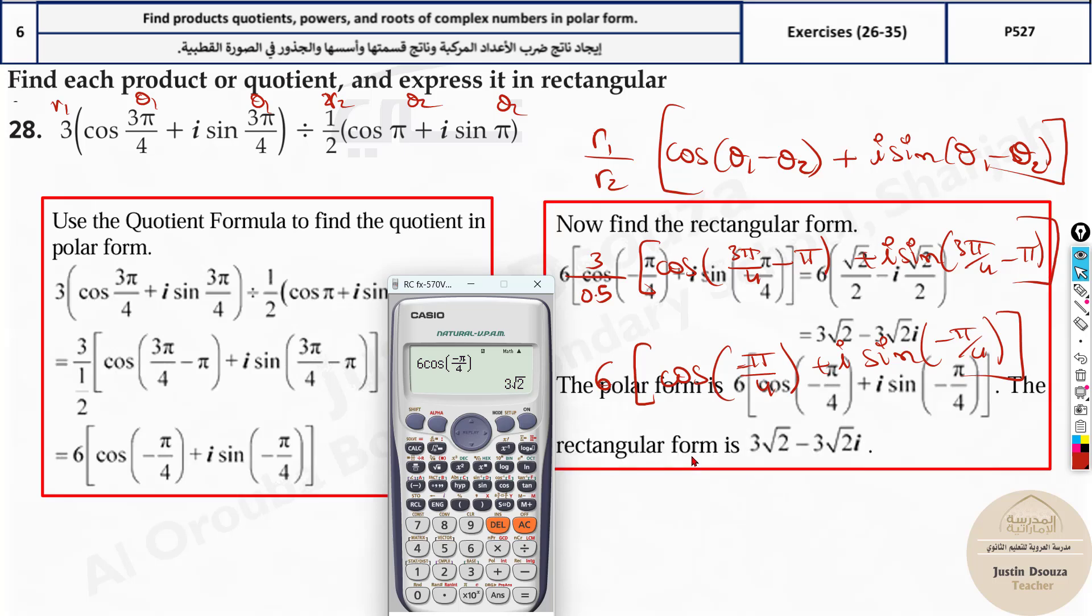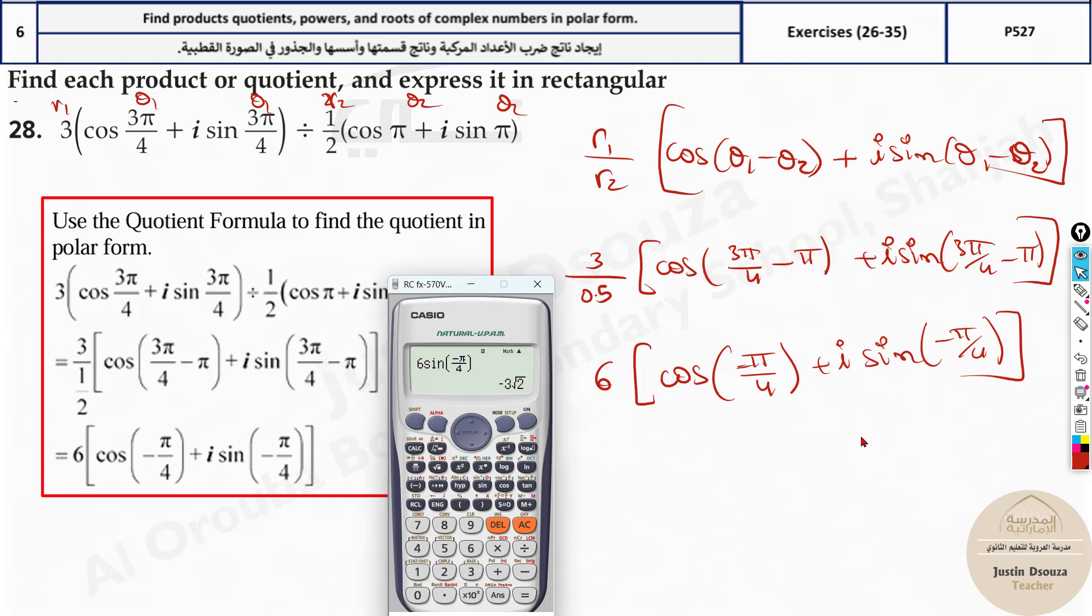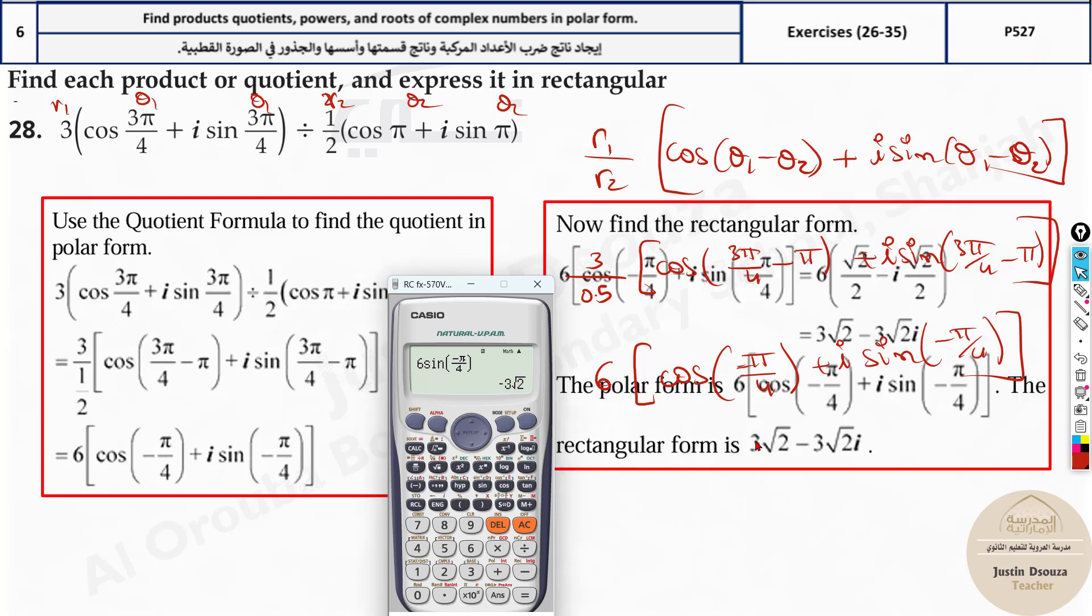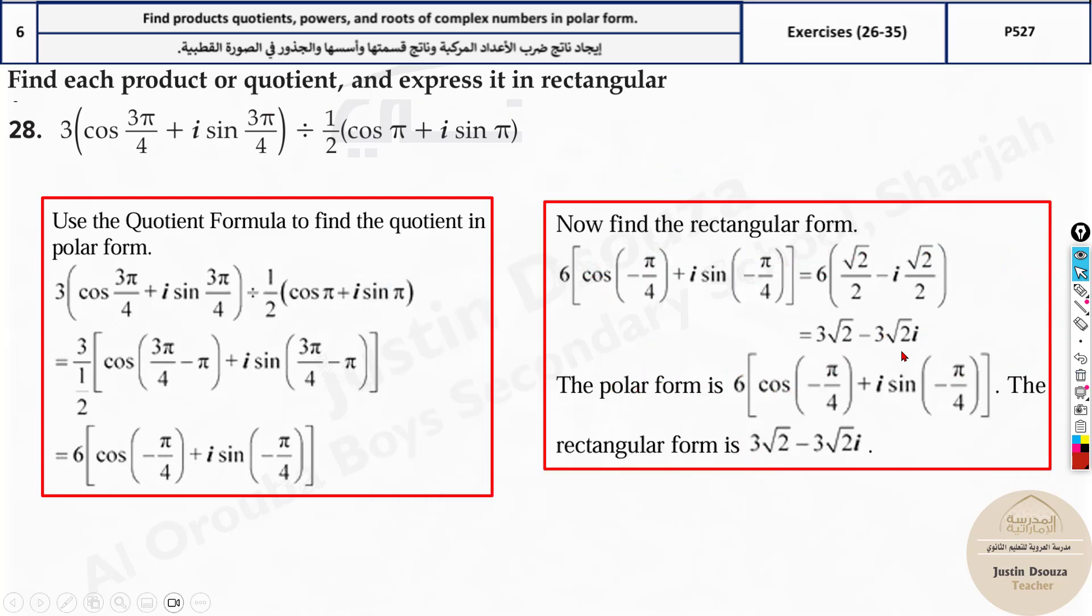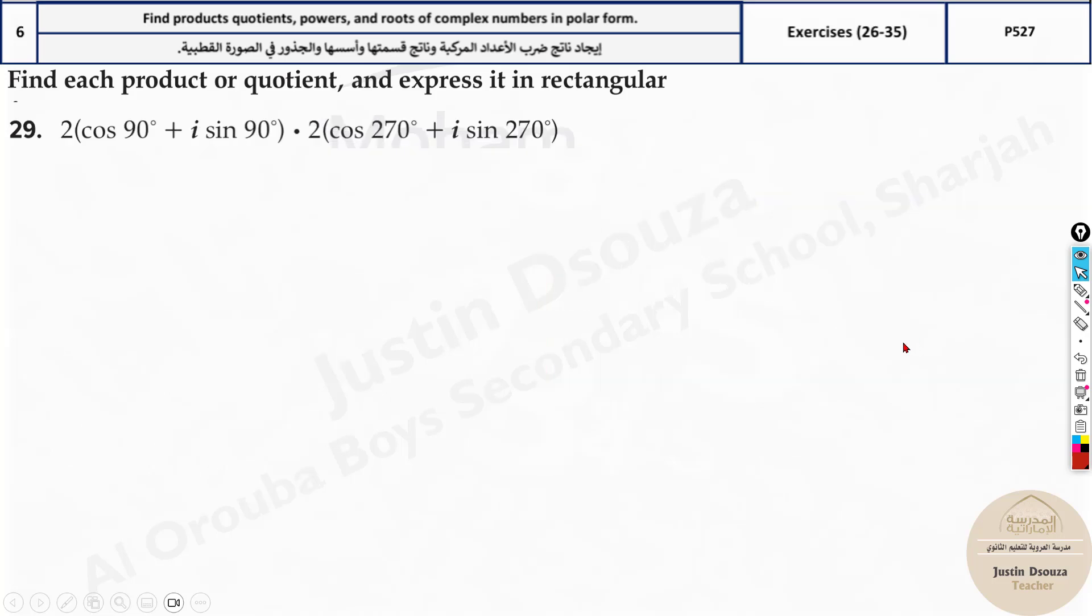Now that will be the first part of the answer. What about the other one? Just change this to sine. From cosine it becomes sine. And the answer is -3√2. That will have i imaginary part. So you can see this is the polar form and the rectangular form is here.